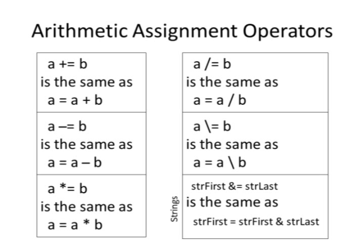In this example, if first was Dan, last was McElroy, by the time we're done, when we say, string first, equals, string first, ampersand, string last, then, string first is going to be Dan McElroy. String last is still going to be McElroy because it's not changed.